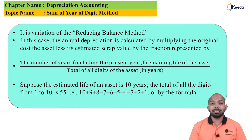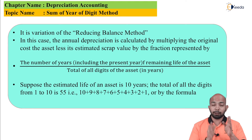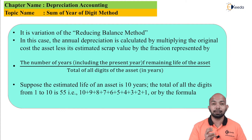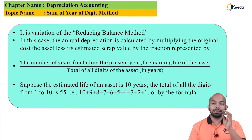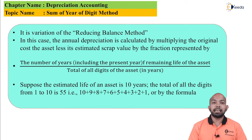The key point here is understanding for which year you are calculating the depreciation. Let's say the useful life of that asset is 10 years, so you have to do two workings. First, you have to add every digit from 1 to 10, because the total useful life is 10 years: 1 + 2 + 3 + 4 + 5 + 6 + 7 + 8 + 9 + 10. This total gives you the denominator, which equals 55, and on the top it will be the numerator.